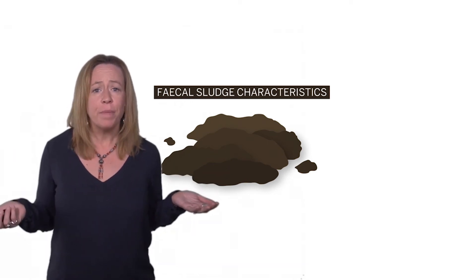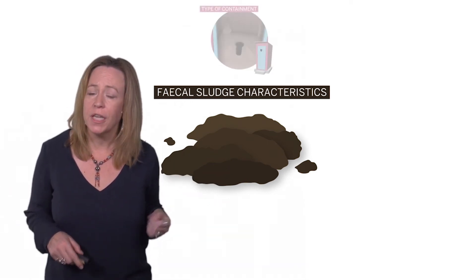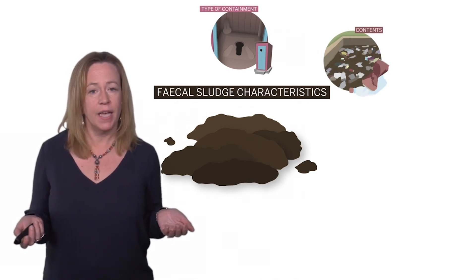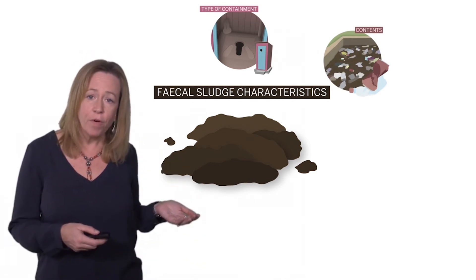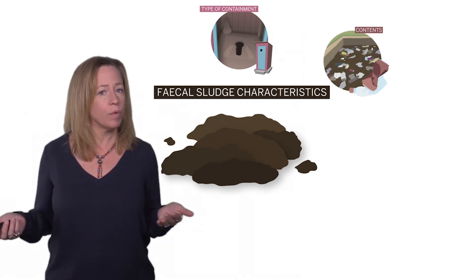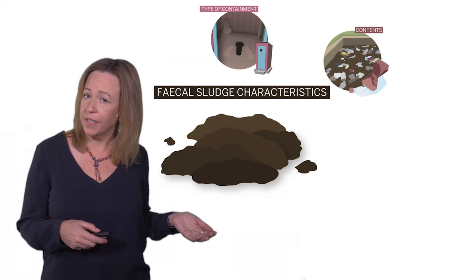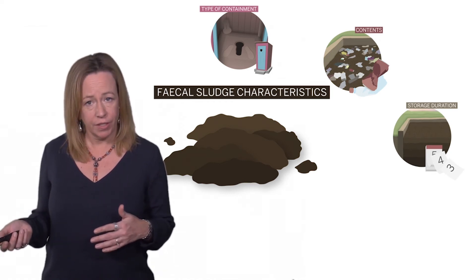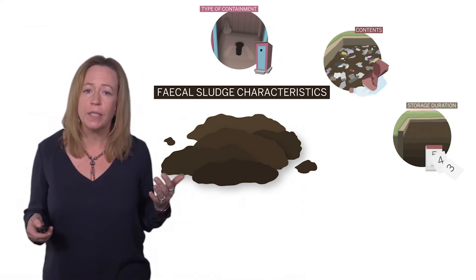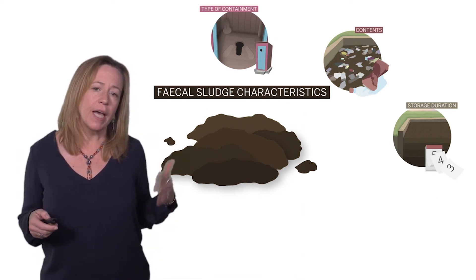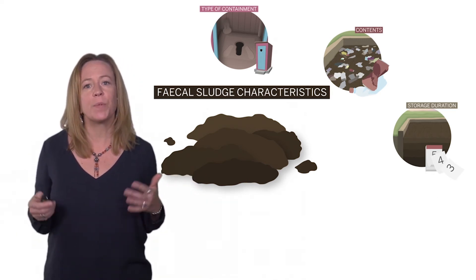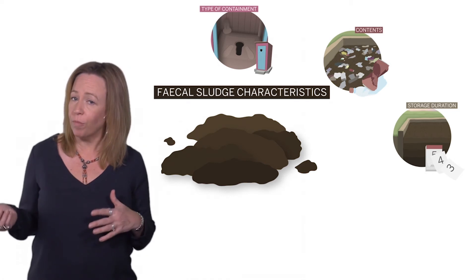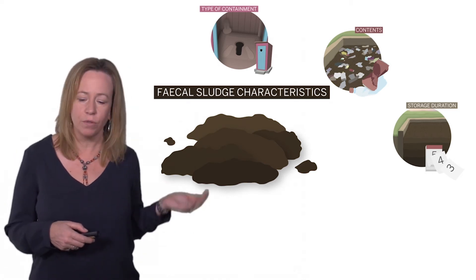What else contributes to the variability of fecal sludge? Things like pit latrines versus septic tanks — this is the type of containment. What is going into the containment? Is it excreta and black water, with or without gray water — meaning it can range from a slurry or mostly water all the way to a semi-solid? This is the contents. The emptying frequency affects the level of stabilization — for example, public toilets or commercial buildings emptied as frequently as daily to weekly, in contrast to systems with emptying frequencies of years. This means fecal sludge can range from fresh or raw to partially stabilized, due to the storage duration.